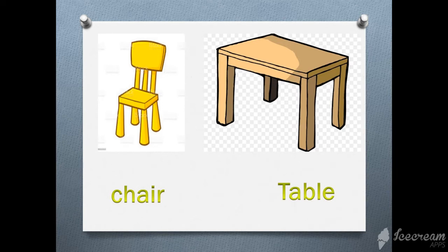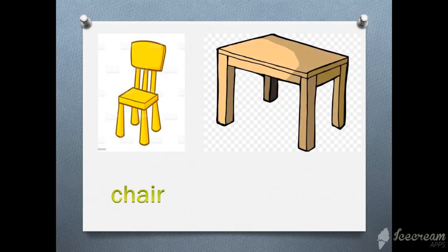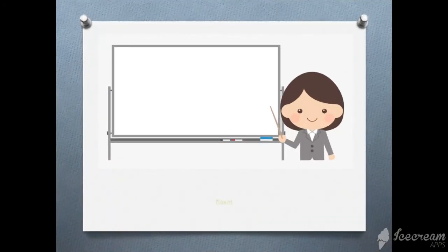Raise your voice. What is this? Table! What is this? Table! Again — what is this? Chair. What is this? Chair. And what is this? Table. Very good. What is this? Table. Say with me — what is this? Table. Very good, excellent.